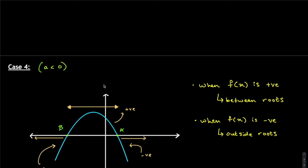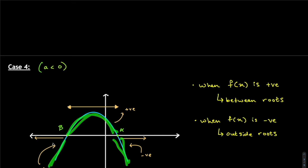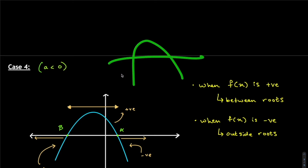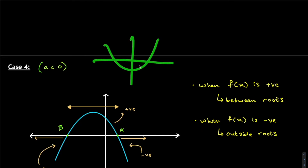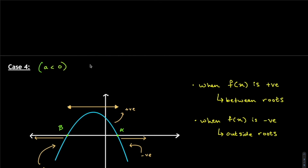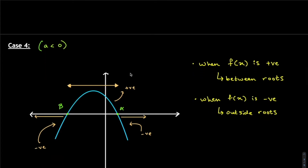In Case 4, a is less than zero — a downward-facing parabola. The same concept applies: values of f(x) between the roots are positive, and beyond alpha and beta they are negative. This is intuitive — you can always draw a simple parabola to understand it. You'll develop better intuition as you do more questions.